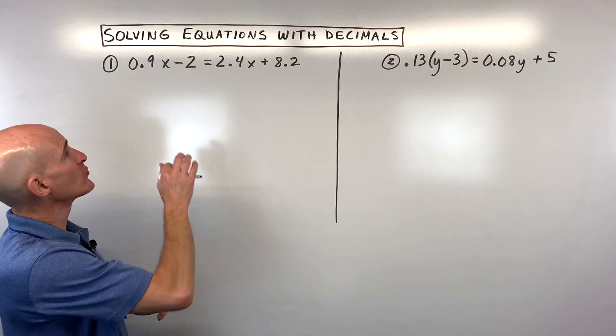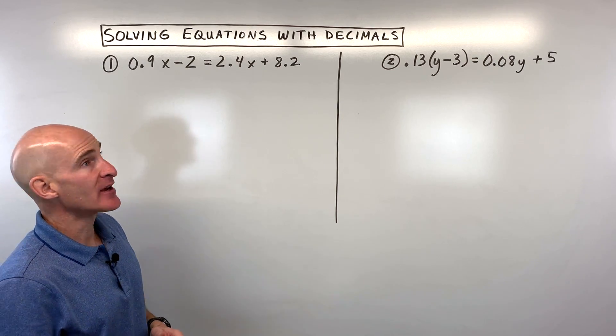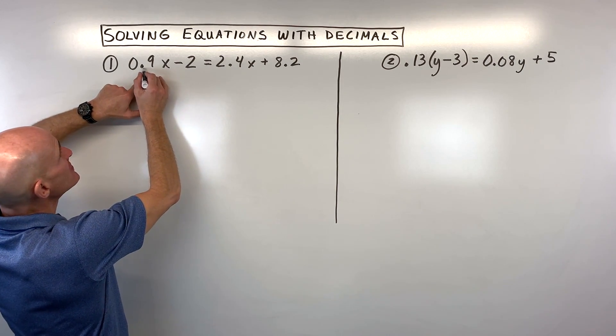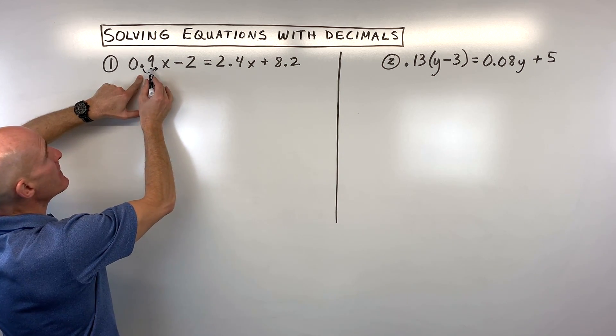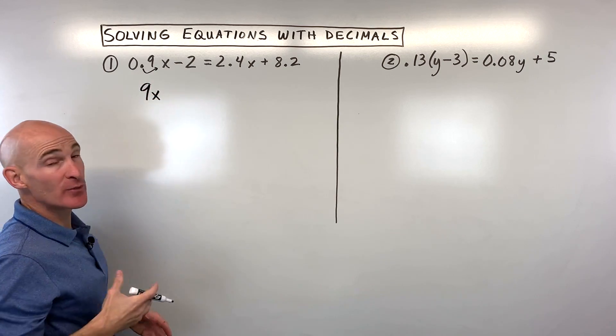So what we can do to clear the decimals is we can multiply through this whole equation by the number 10. Now the nice thing about multiplying by 10 is it moves the decimal one place to the right, making this now 9x, and that's a whole number which is a little bit easier to work with.